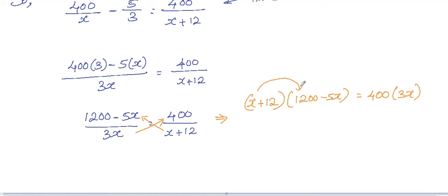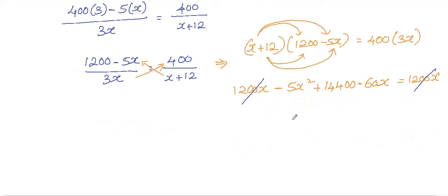Now expand it. We'll get 1200X minus 5X squared plus 14400 minus 60X equals 1200X. We have 1200X on both sides, so just cancel that out.